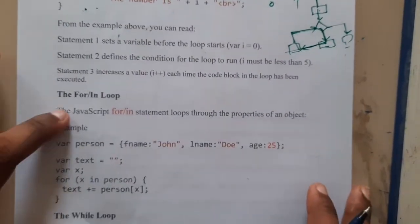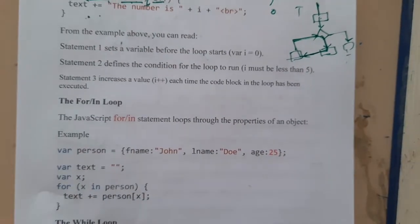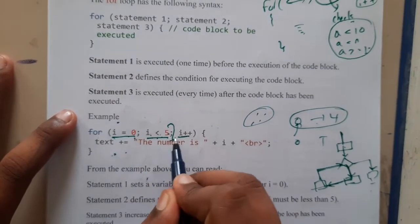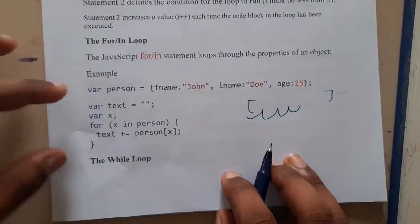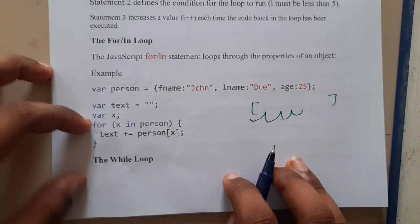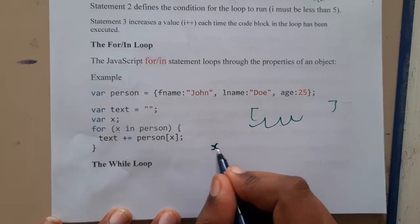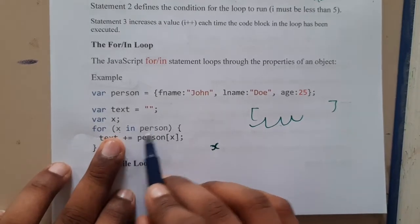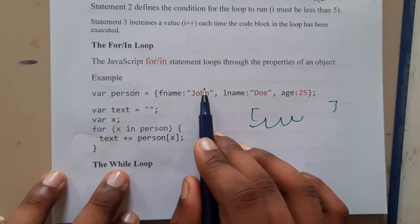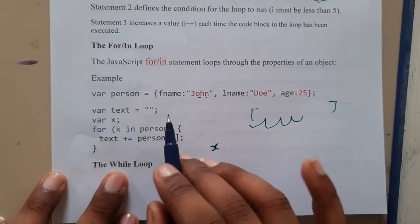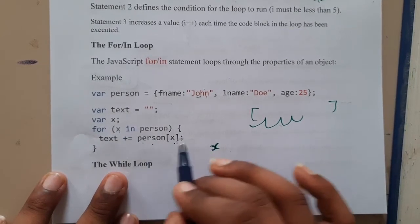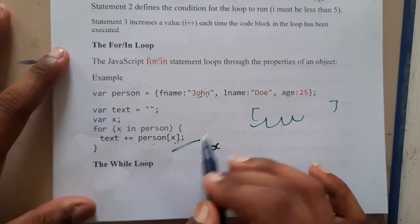Now let us go through 'for in' or 'forEach'. When you have an array and want to read each element, the standard way is a bit complex. So they came up with a simpler idea: you assume a variable x, then write 'x in person' — it checks each value in 'person' and stores it in x. That might be the index or the value, depending on the programming language. You can then use it inside the loop.